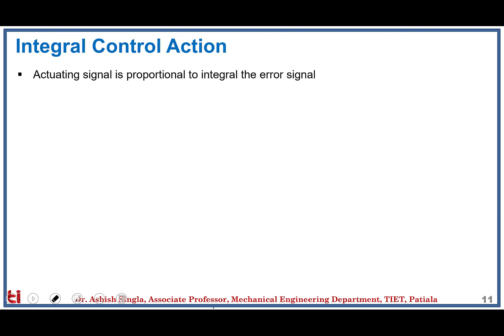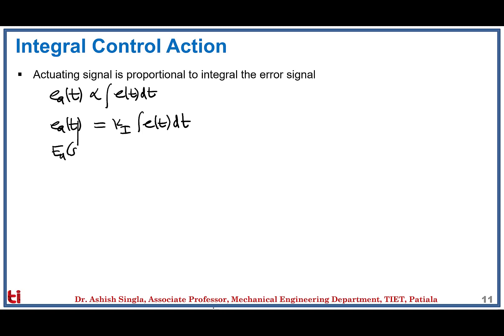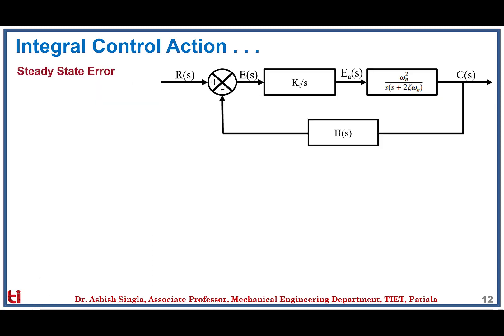Next is the integral control action, where the actuating signal is proportional to the integral of the error: E_a(t) is proportional to ∫E(t)dt — it is based on the accumulation of error from where the system starts until now. Introducing constant KI and taking the Laplace transform, E_a(s) = KI · (1/s) · E(s). The transfer function of the integral controller is KI/s, shown in the block diagram accordingly.